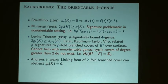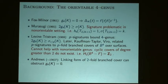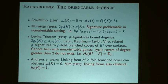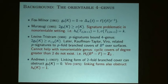One result I just learned about was that Andrews, around 1963, used the linking form of three-manifolds to obstruct having four-genus zero — it's unpublished and referred to by others in various ways. In any case, the linking form provided the first method to understand the non-orientable genus.